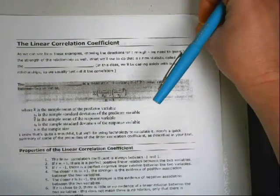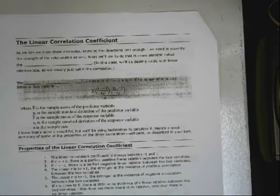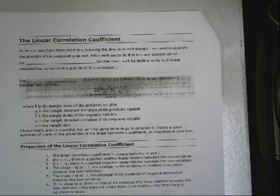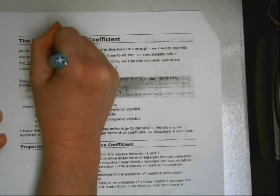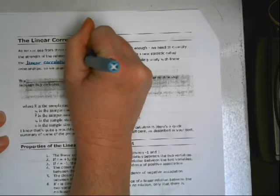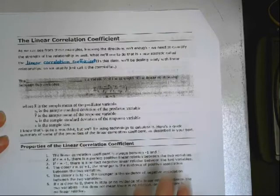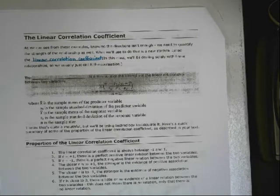So, that's what we have to take into account on the next page. As you can see from those examples, knowing the direction that they're going isn't enough. We have to quantify the strength of the relationship as well. So, what we use to do that is a new statistic called the linear correlation coefficient.